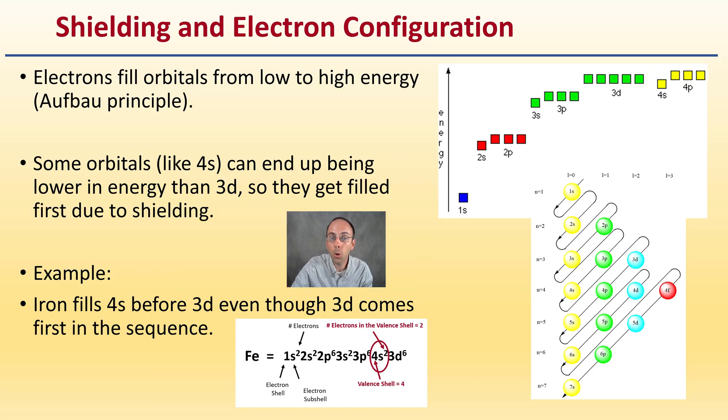How it relates to electron configuration is electrons fill orbitals from low to high energy. Some orbitals like 4s can end up being lower in energy than 3d, so they get filled first due to shielding. This is where if you follow that little cheat sheet that I provided you with as a way to help you organize yourself, this plays into that situation perfectly.